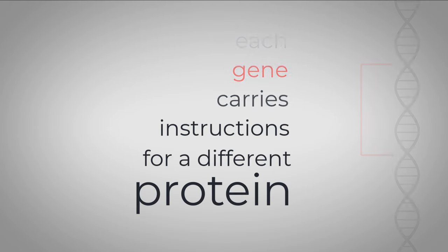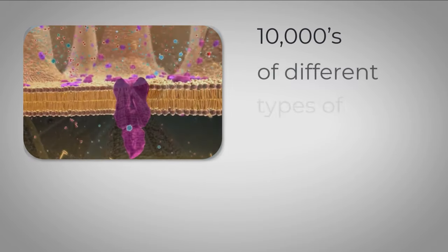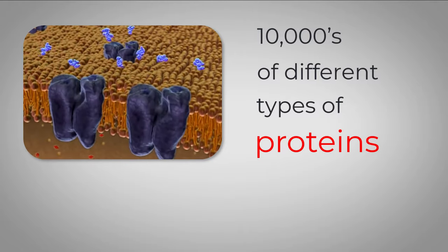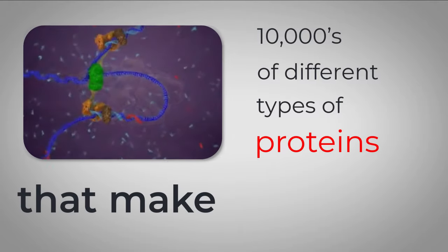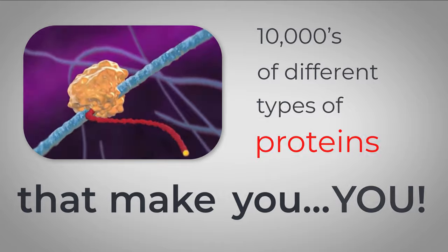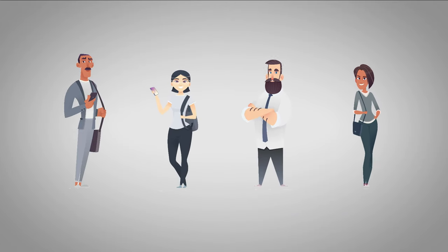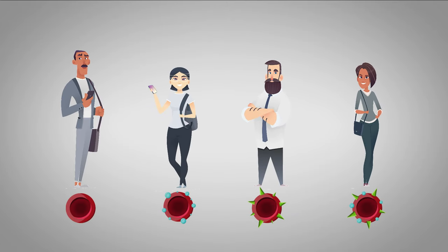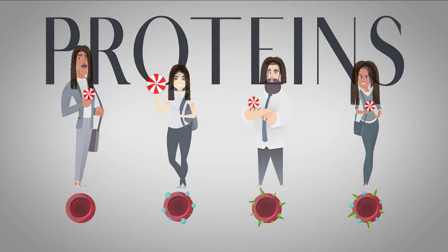Yeah, you actually have tens of thousands of different types of proteins that are responsible for all of the characteristics that make you, you. Everything from your skin color to your blood type, to whether your hair is curly or straight, even your ability to taste peppermint, it's all controlled by the proteins within your cells.